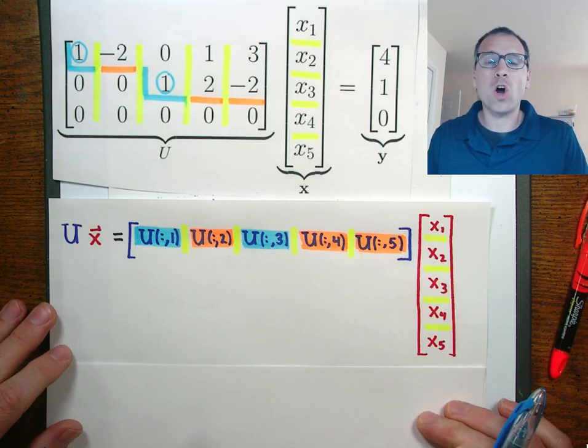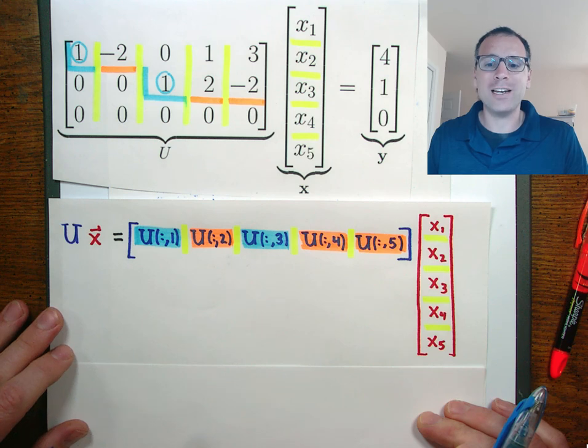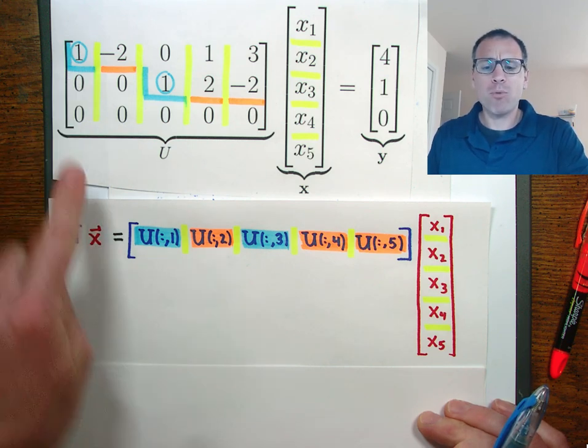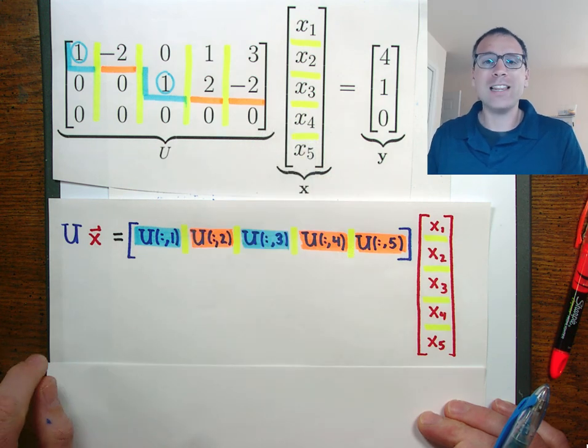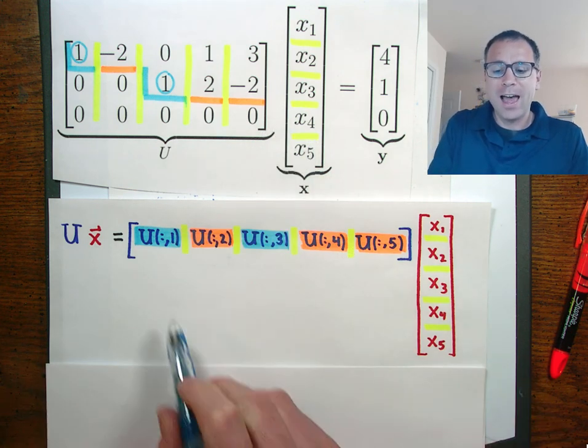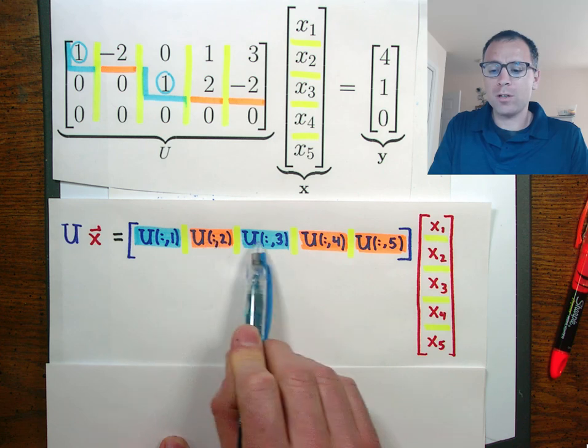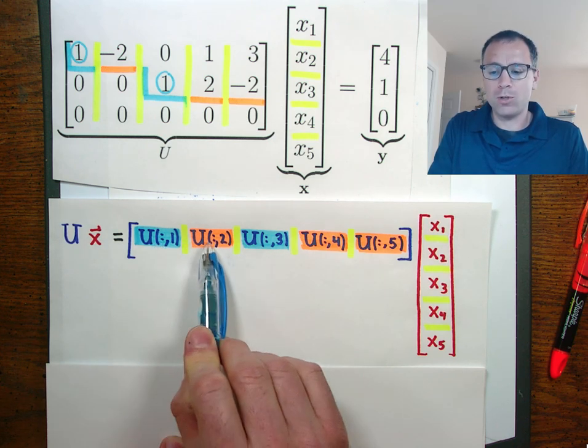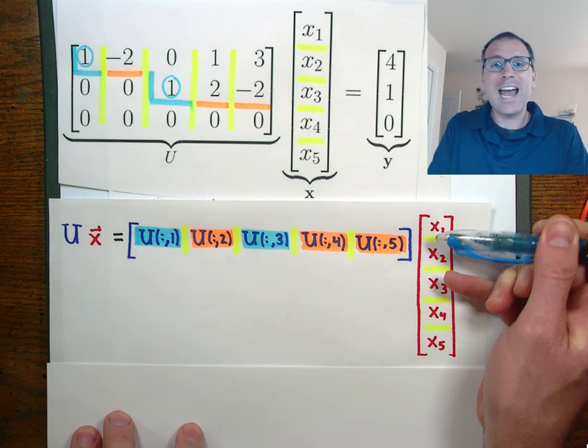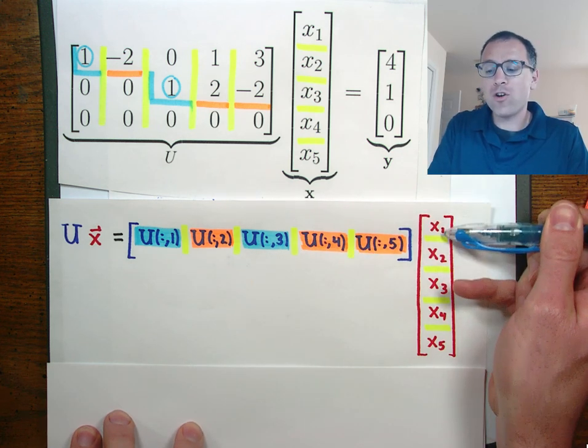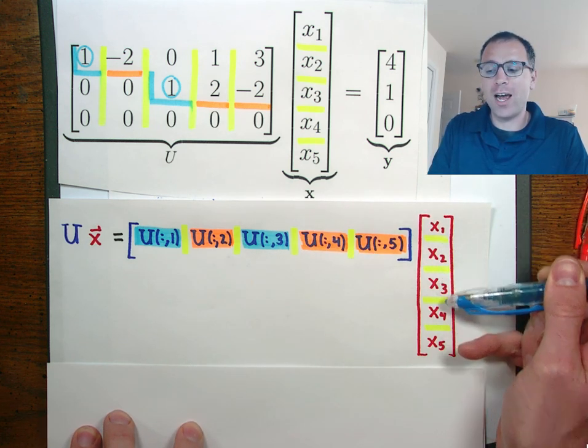Here's where I want to really combine our fluency and skills in linear algebra. If we actually break down what the u times x variable linear combination looks like, the individual columns of u - column 1 of u, column 2 of u, column 3 of u, 4, 5 - get paired up with the rows of the vector x.